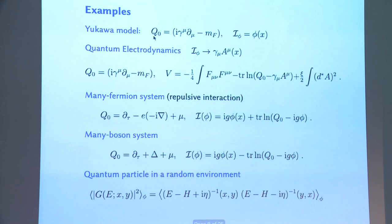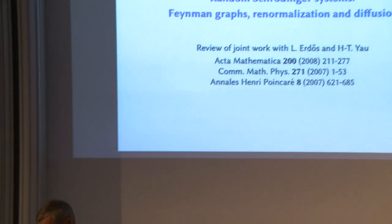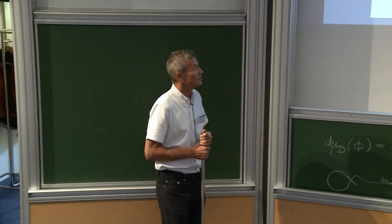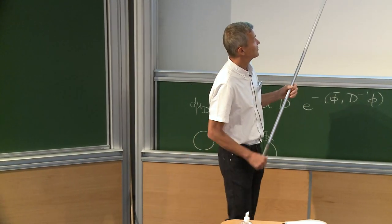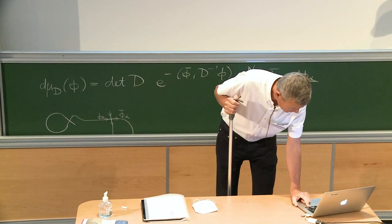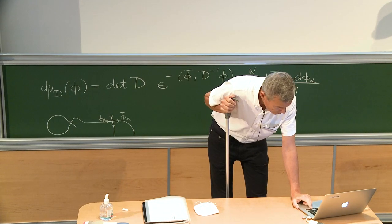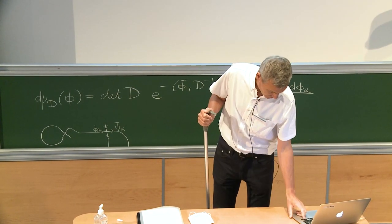After this general introduction, I would like to come to the topic ordered for this talk: the random Schrödinger system. I will explain the Feynman graphs one encounters there, discuss what the values are, go through a few calculations, and then apply this to show that there is diffusion on a certain time scale. This is old work, but since I was asked I will review it here.